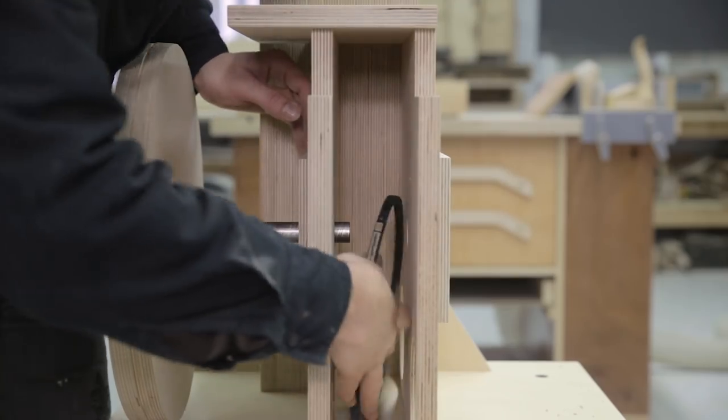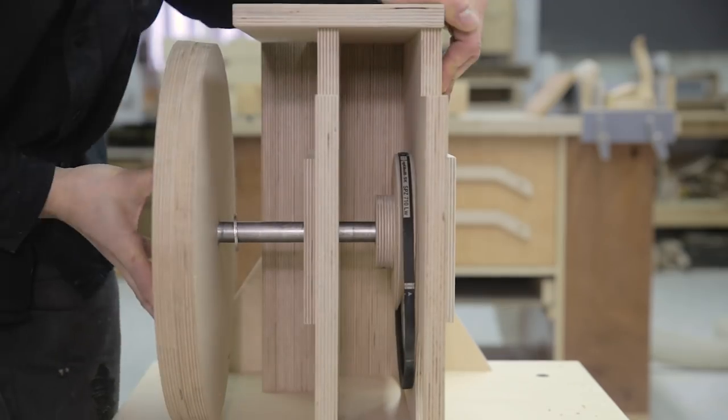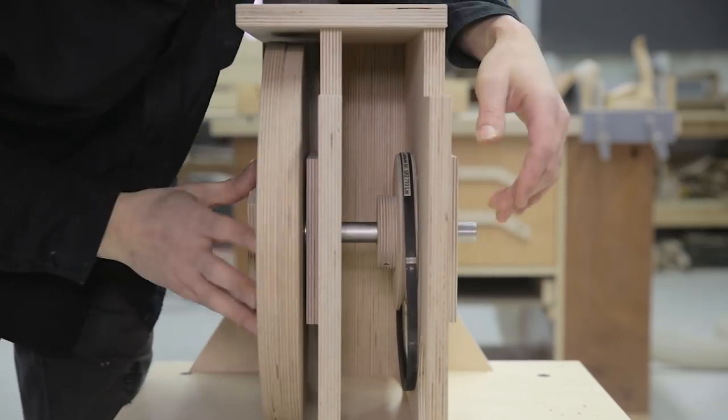I remove the wheel partway to insert the pulley and belt. I look for the marks I made before and put in the headless screw.